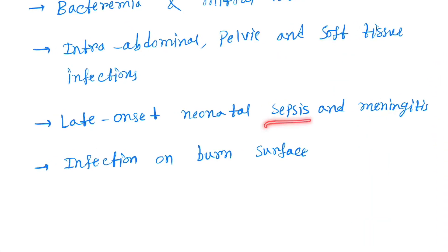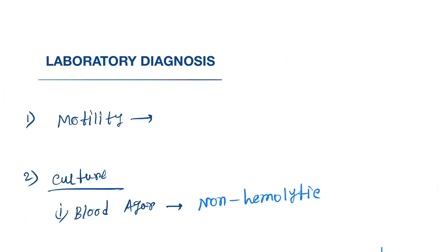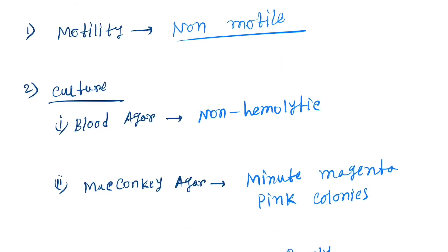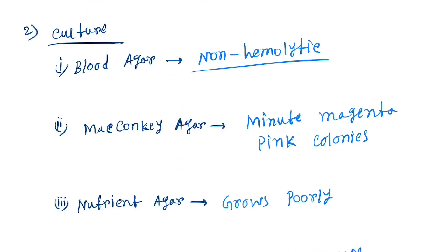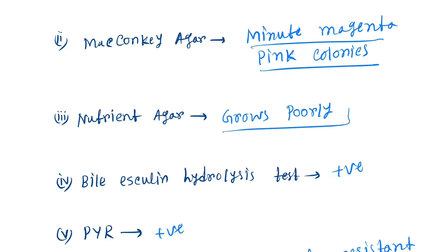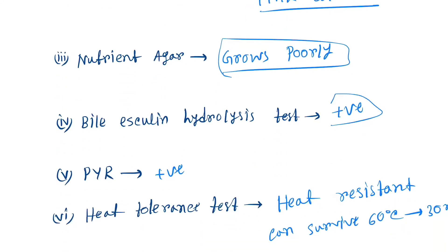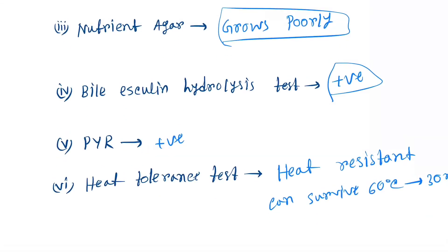For laboratory diagnosis: they are non-motile. Culture on blood agar shows non-hemolytic colonies; MacConkey agar shows minute magenta-pink colonies; nutrient agar shows poor growth. Bile esculin test is positive, PYR test is positive. They are heat tolerant and can survive 60 degrees Celsius for up to 30 minutes.